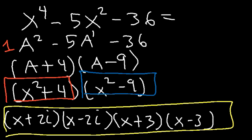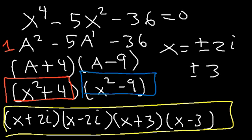If this expression were equal to zero there would be four answers: x could be plus or minus 2i, which are two imaginary answers, and x could be plus or minus 3.